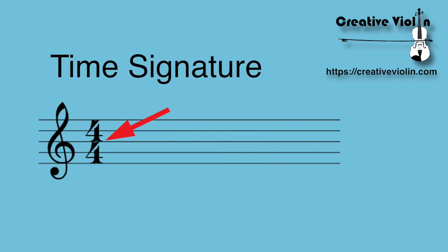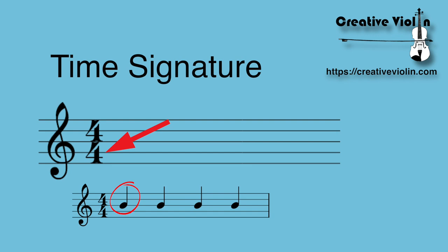At the beginning of a staff, you'll also see the time signature. Here you see four quarters. If you look at the bottom number, that is the count. In this case, a quarter is the count. But don't worry, we'll explain it all when it comes. The top number will say how many counts are in a bar. So in this case, we have four counts in a bar, so we count to four.